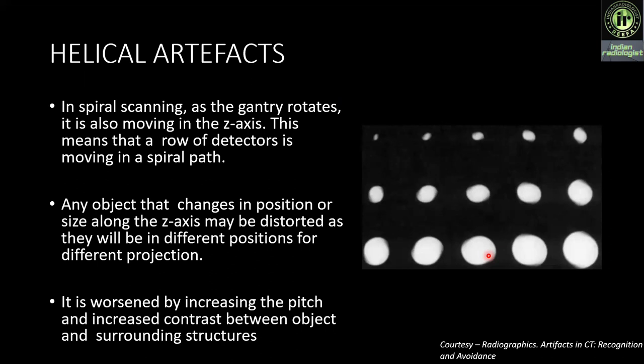Next is helical artifacts. In spiral scanning, as the gantry rotates, it is also moving in the Z axis, meaning a row of detectors is moving in a spiral path. Any object that changes in position or size along the Z axis may be distorted as it will be in different positions during acquisition. This is worsened by increasing the pitch and increased contrast between the object and the surroundings. Serial CT images of a conical phantom demonstrate a change in shape of the object due to this artifact.